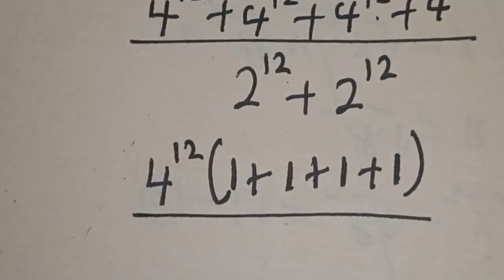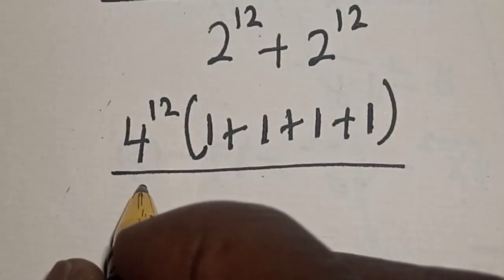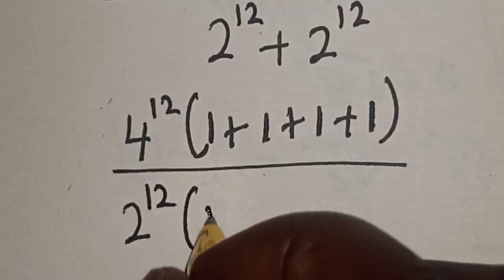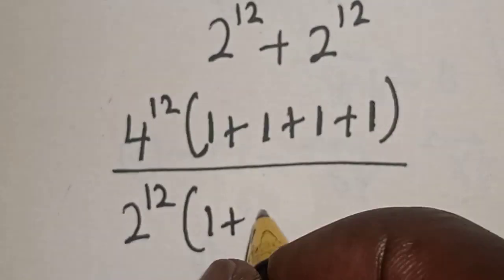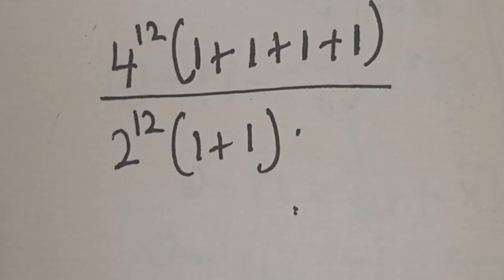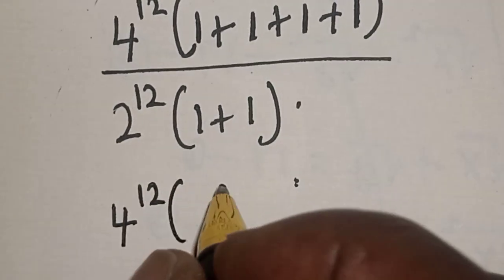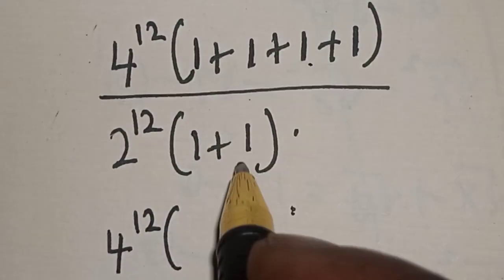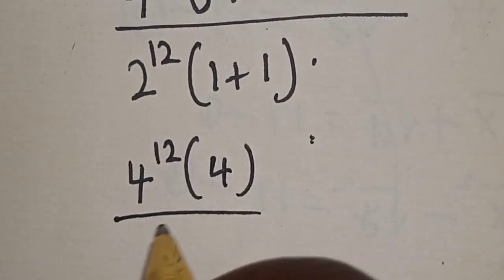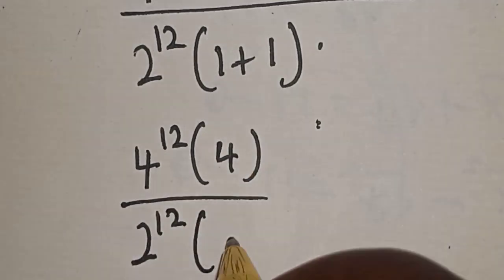Then, over the denominator, 2 to the power 12 is common. We get 2 to the power 12 times 1 plus 1, which equals 2. So we have 4 to the power 12 times 4, over 2 to the power 12 times 2.